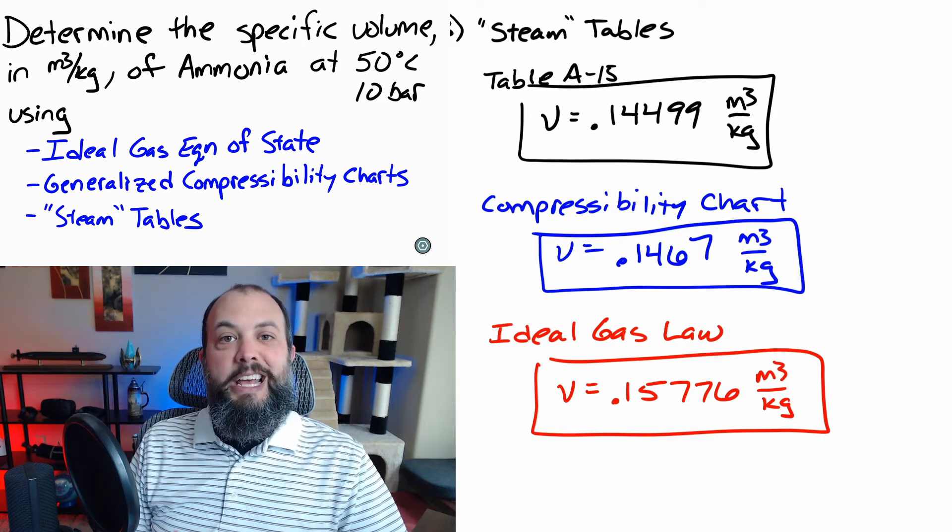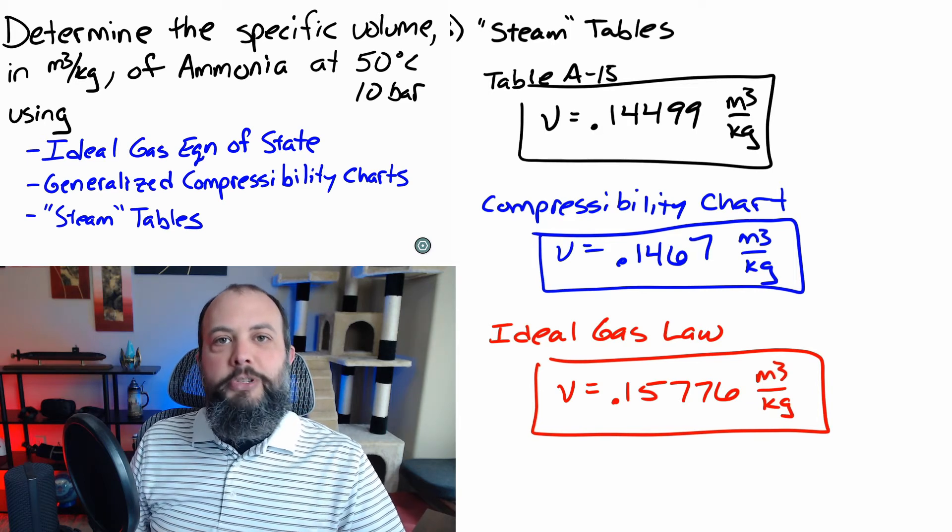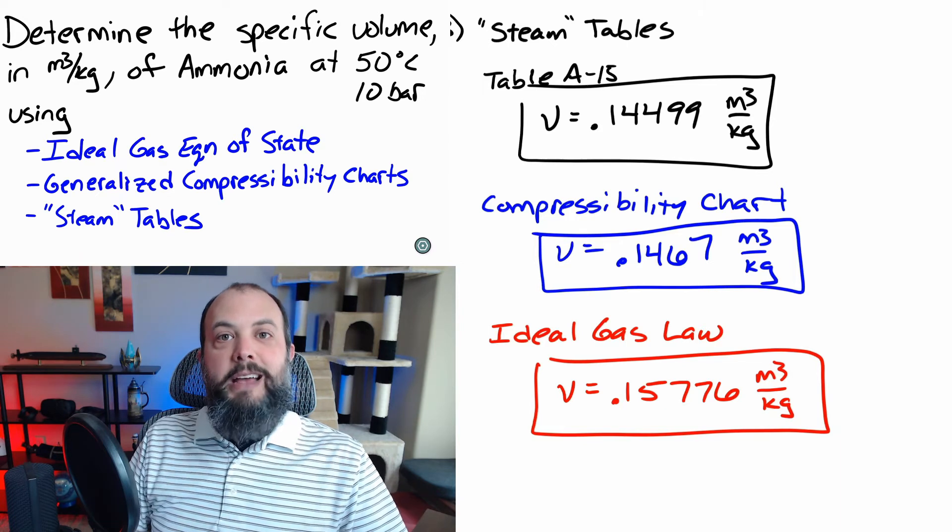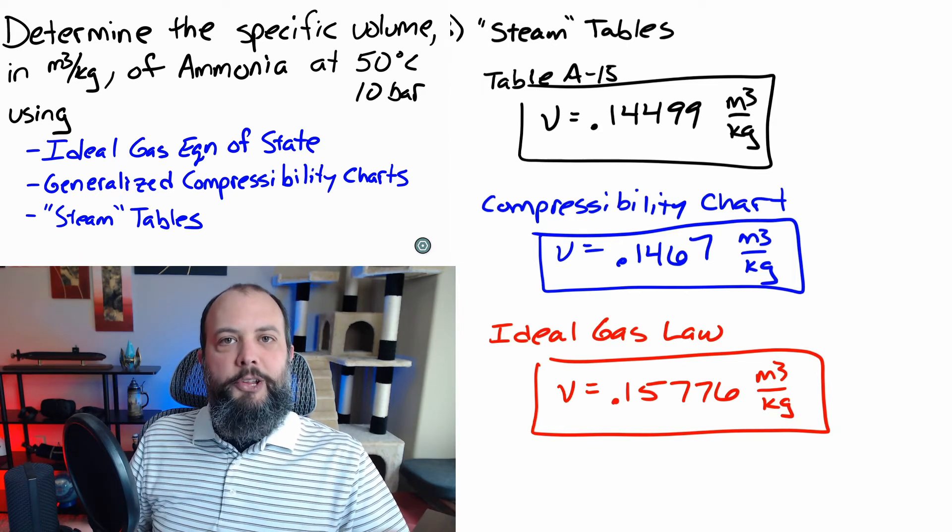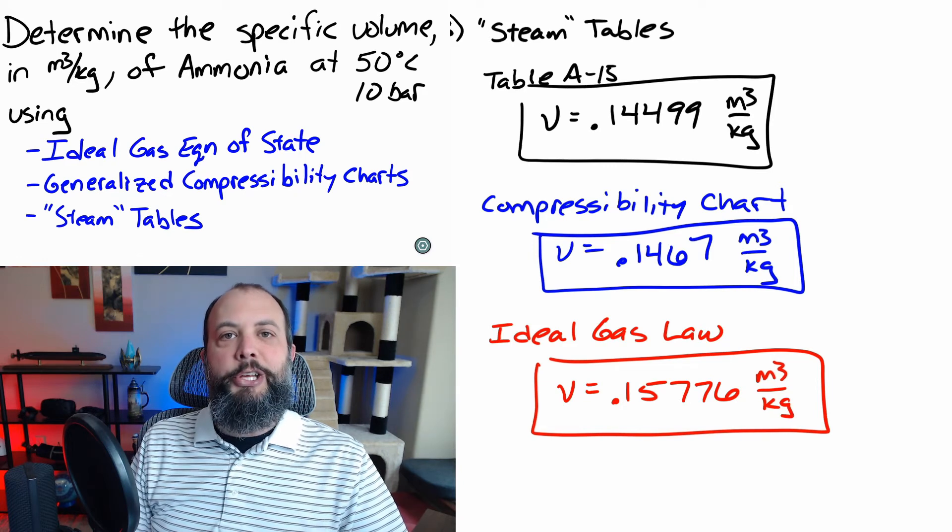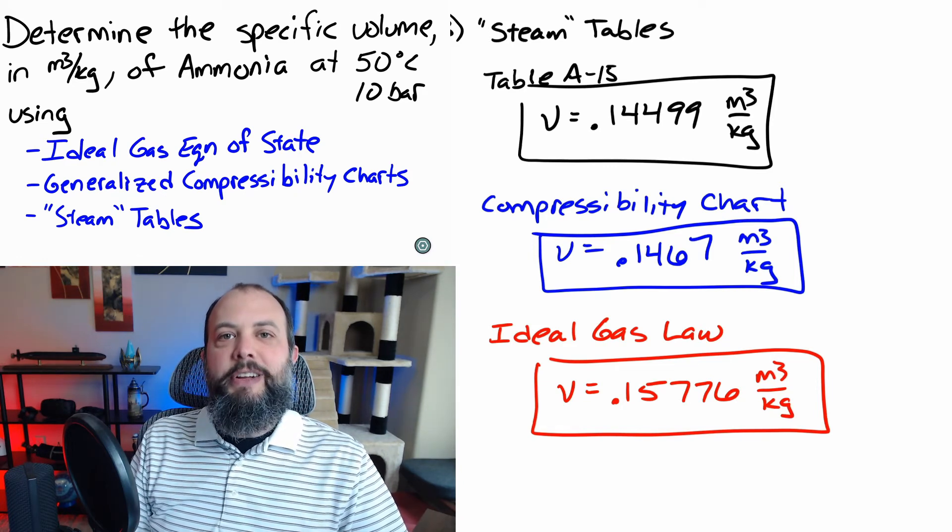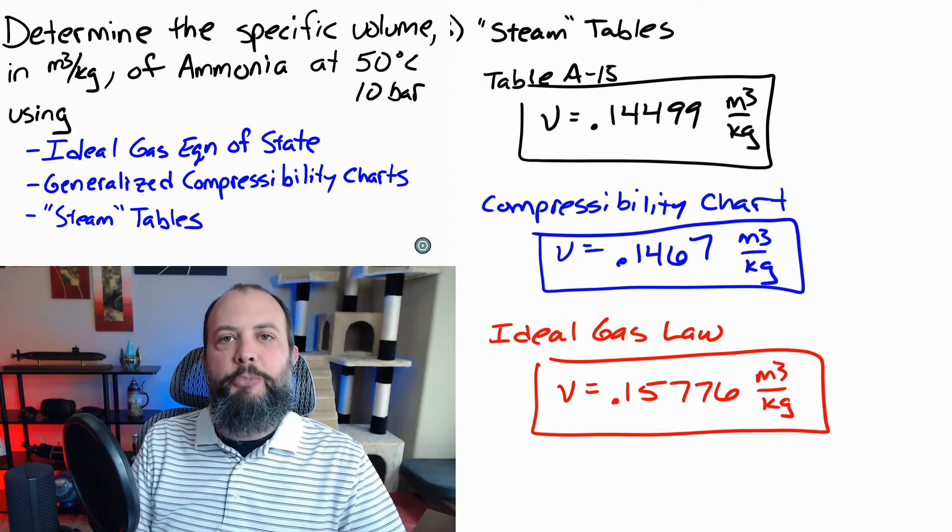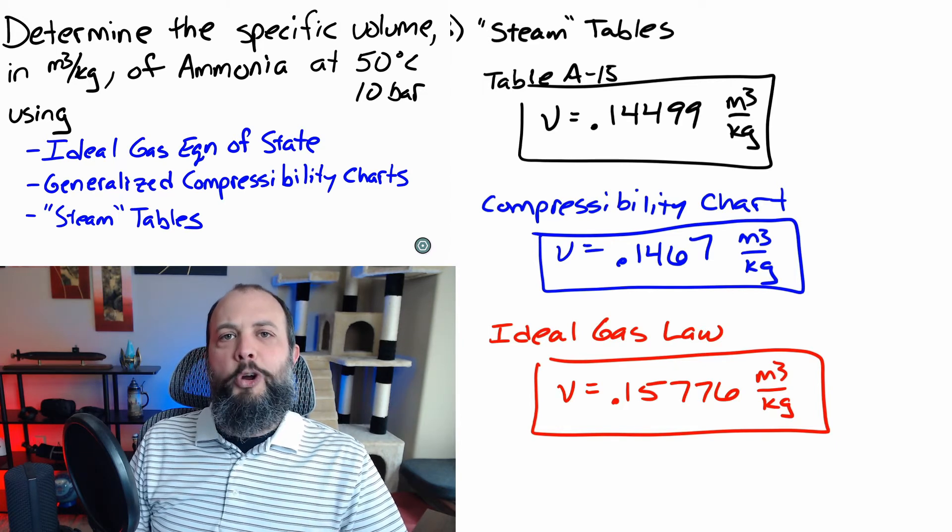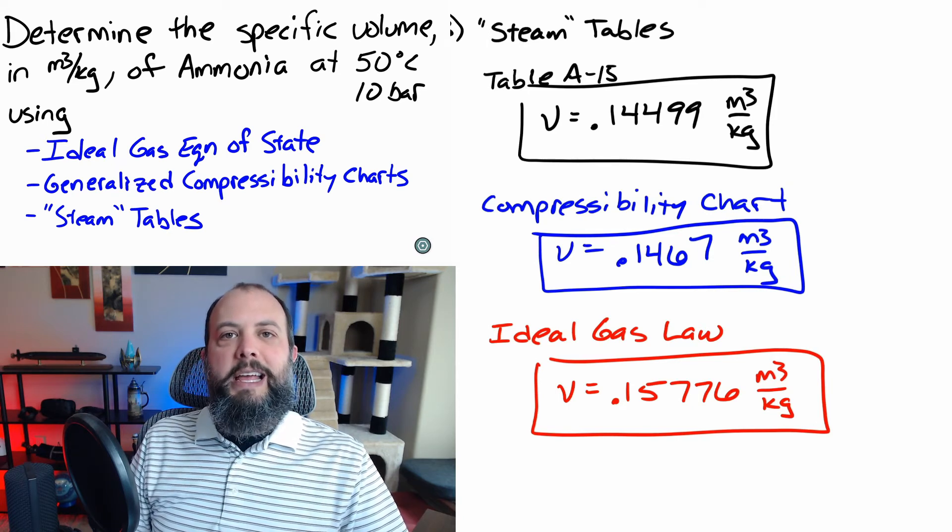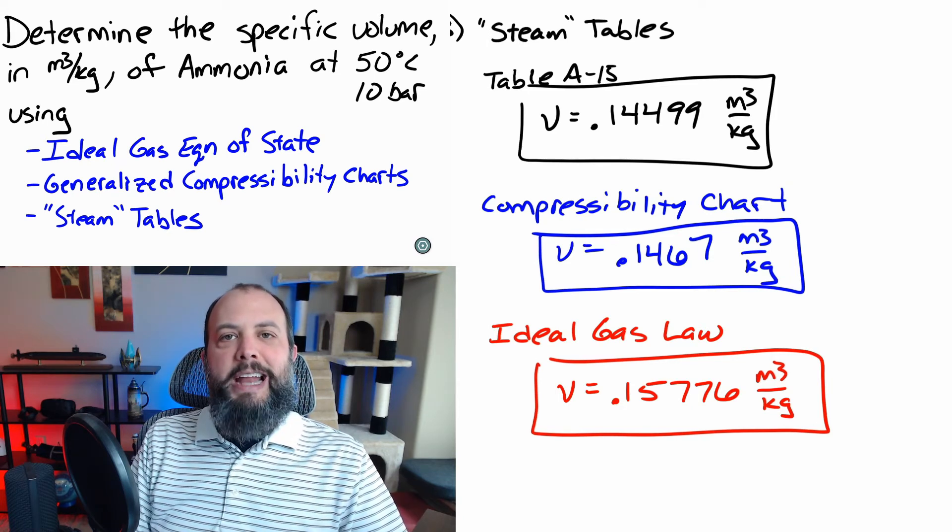The ideal gas law is an approximation. There's no such thing as an ideal gas. Many gases behave like ideal gases, especially in regular environmental conditions, but even elemental gases like helium or hydrogen or oxygen, even they differ from ideal gas behavior when you start getting very cold temperatures or very high pressures.